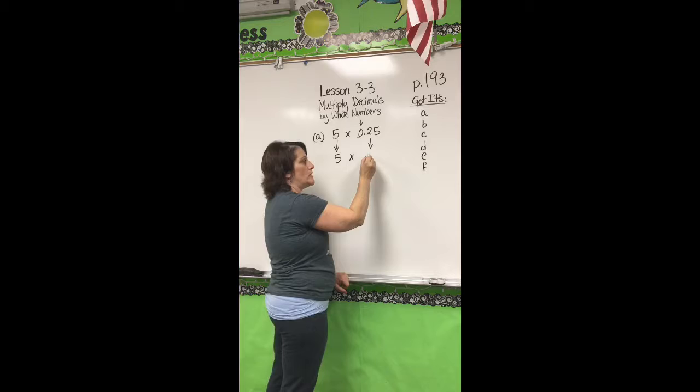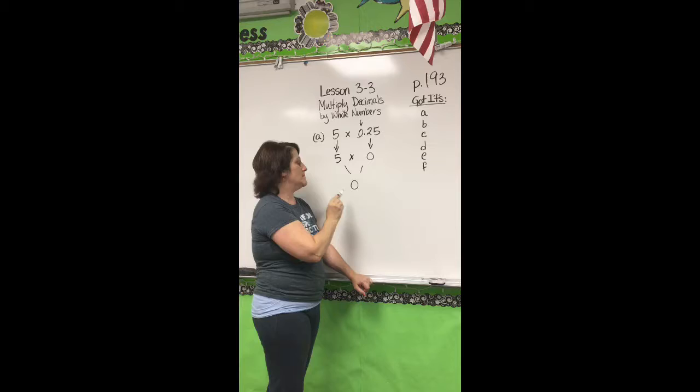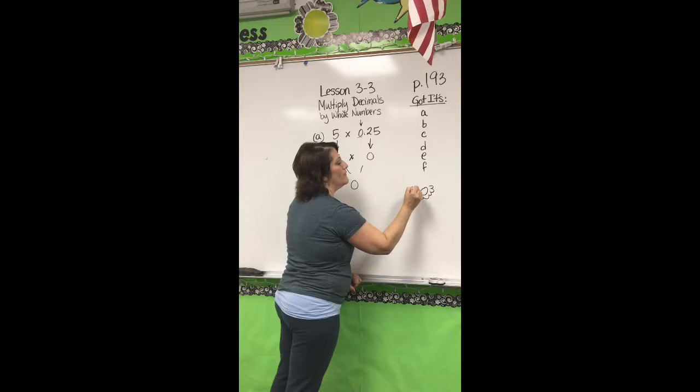Now, it may seem a little strange, but I'm going to explain why it will make sense. 5 times 0, we know, is 0. I'm going to take this product estimation and pin it over here to remember for later.